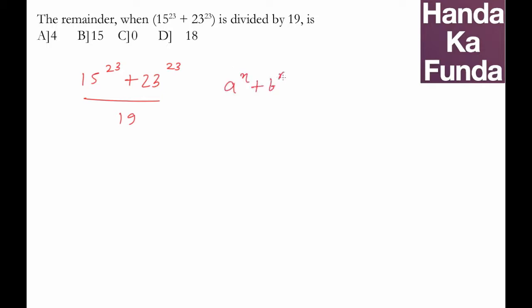to the power n plus b to the power n is divisible by a plus b when n is odd, then this question becomes very simple. Why? Because if a to the power n plus b to the power n is divisible by a plus b when n is odd, all these conditions are being met here.